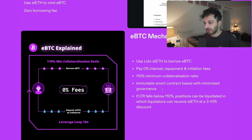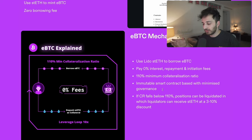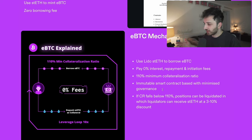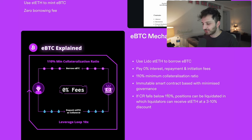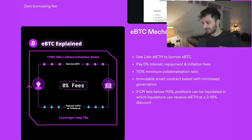The entire protocol is built on an immutable smart contract that can't be changed, and they really focus on the idea of minimal governance. What happens if the collateral ratio falls below 110%? Essentially your stETH position has dropped in value significantly more than your borrowed amount — positions can be liquidated. If you are a liquidator, you can receive stETH at around a 3% to 10% discount. You can easily monitor your parameters, so make sure your position doesn't fall below 110%. Those who want to do leverage loop strategies — deposit collateral, borrow EBTC, sell for more stETH, and loop — will be earning very good yields but need to be careful.